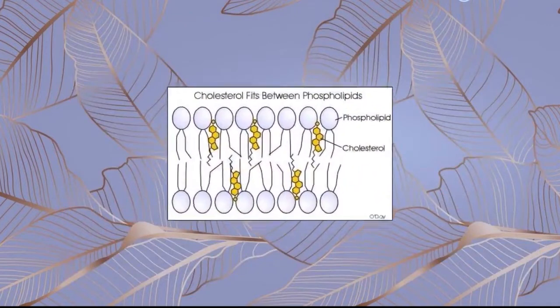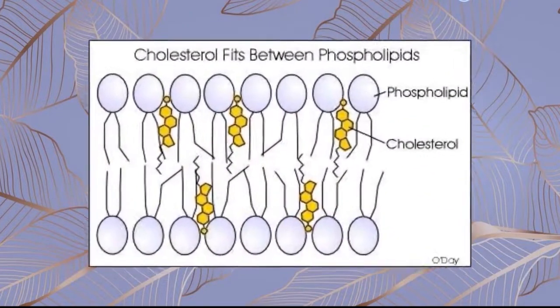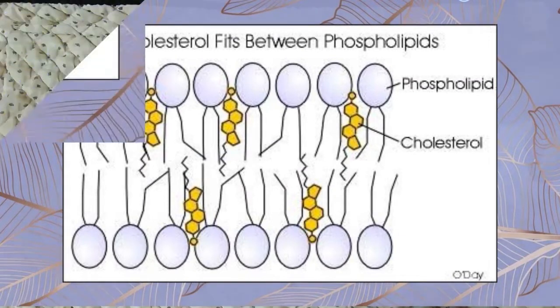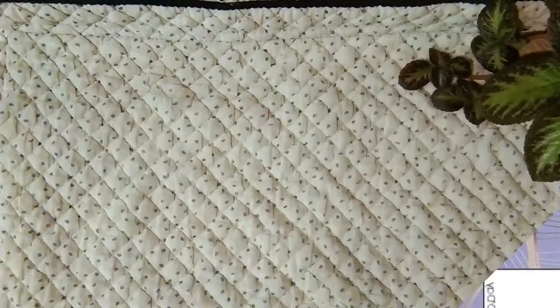Meanwhile, the bilayer also consists of cholesterol. It contributes to the flexibility of the membrane and prevents the phospholipids from separating too far from each other or from compressing too much with the other phospholipids.